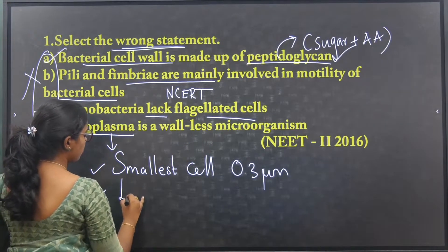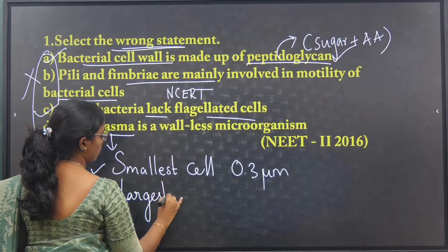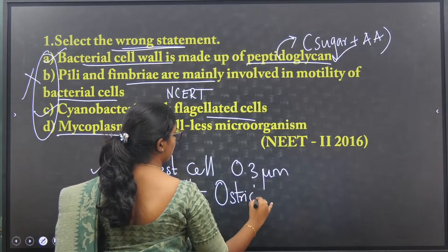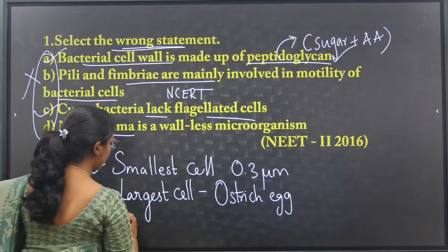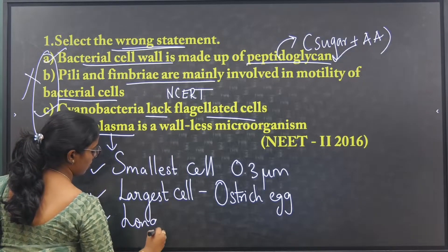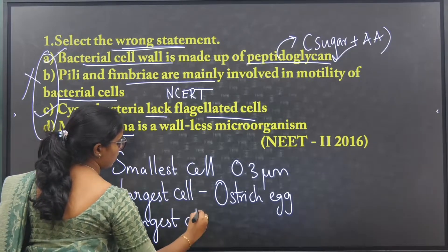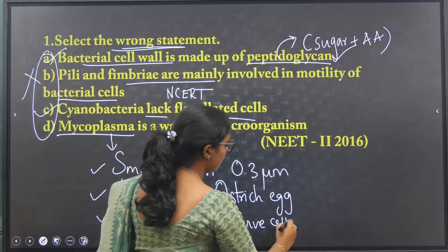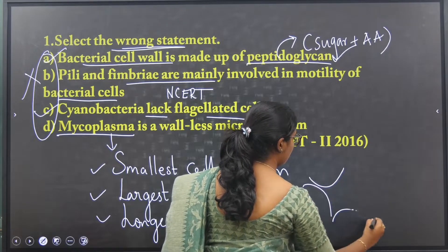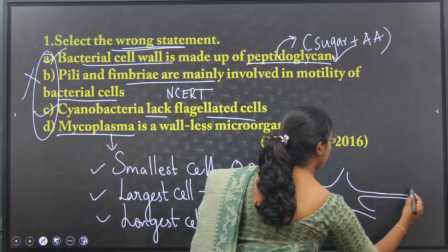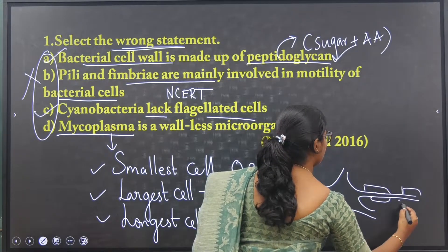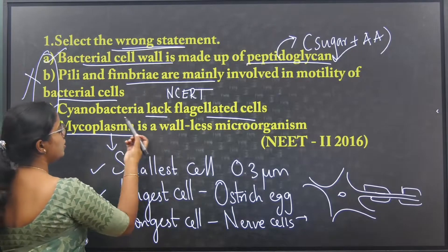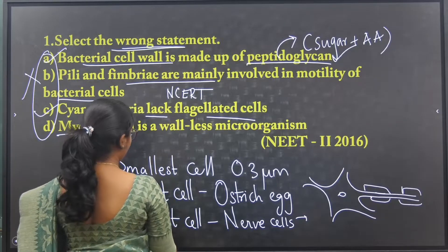The largest cell is the ostrich egg, and the longest cell is the nerve cell. Mycoplasma is the smallest cell, which does not have a cell wall — it is a wall-less microorganism. This statement is also correct.